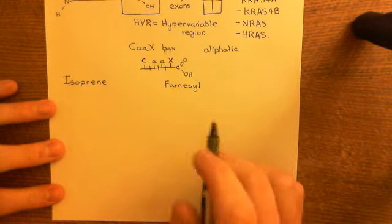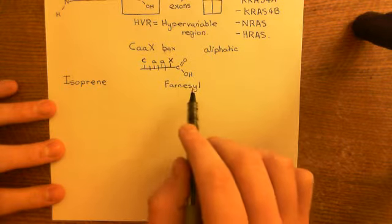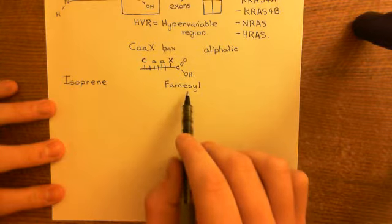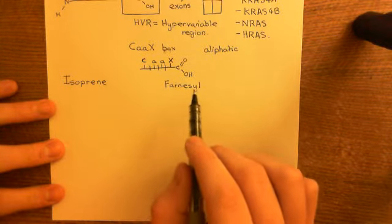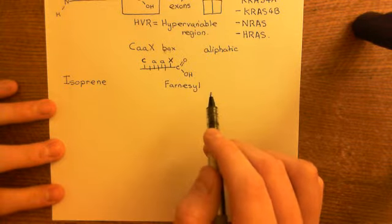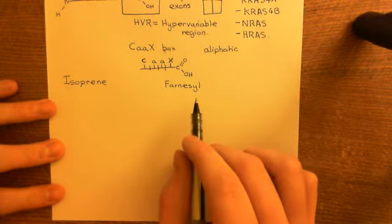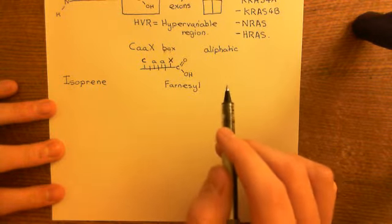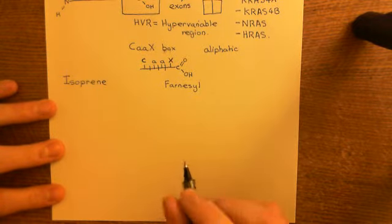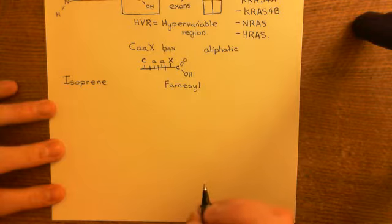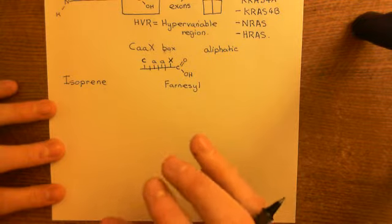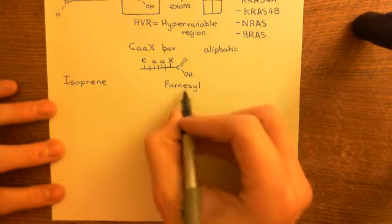One is prenylation, which means sticking farnesyl groups or geranylgeranyl groups — but in this case it's going to be farnesyl — onto proteins. The next is sticking acyl groups onto proteins, such as palmitoyl groups or myristoyl groups. And then finally there's also putting glycosylphosphatidylinositol groups onto proteins. The first lipid modification that all four RAS proteins are going to undergo is that they're going to have farnesyl groups put on, and farnesyl groups are an example of a prenyl group because they are based on the molecule isoprene.